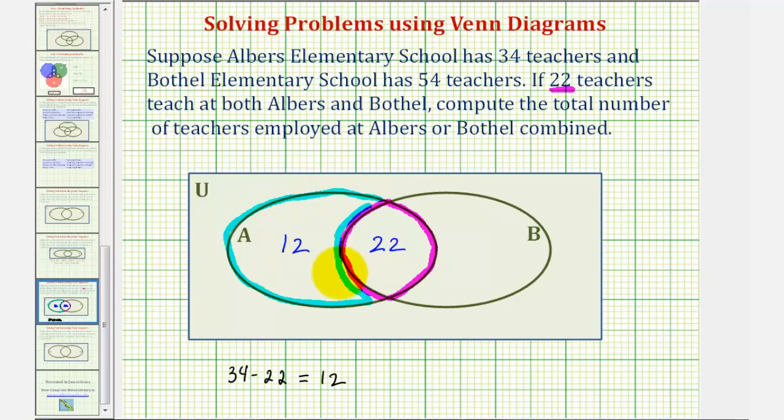Now using the same reasoning, we can determine how many teachers only teach at Bothell. Notice that Bothell has 54 teachers, but 22 of those also teach at Albers, and therefore 54 minus 22 will give us the number of teachers that only teach at Bothell, which would be the number of teachers in this region here. And since 54 minus 22 equals 32, we know there are 32 teachers in this region here.